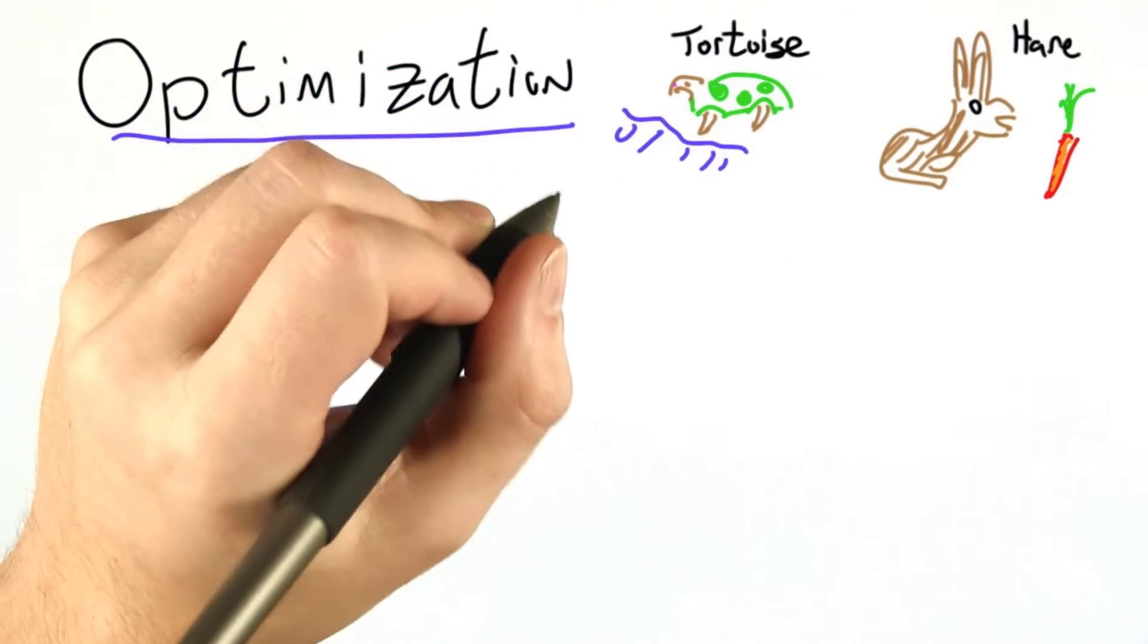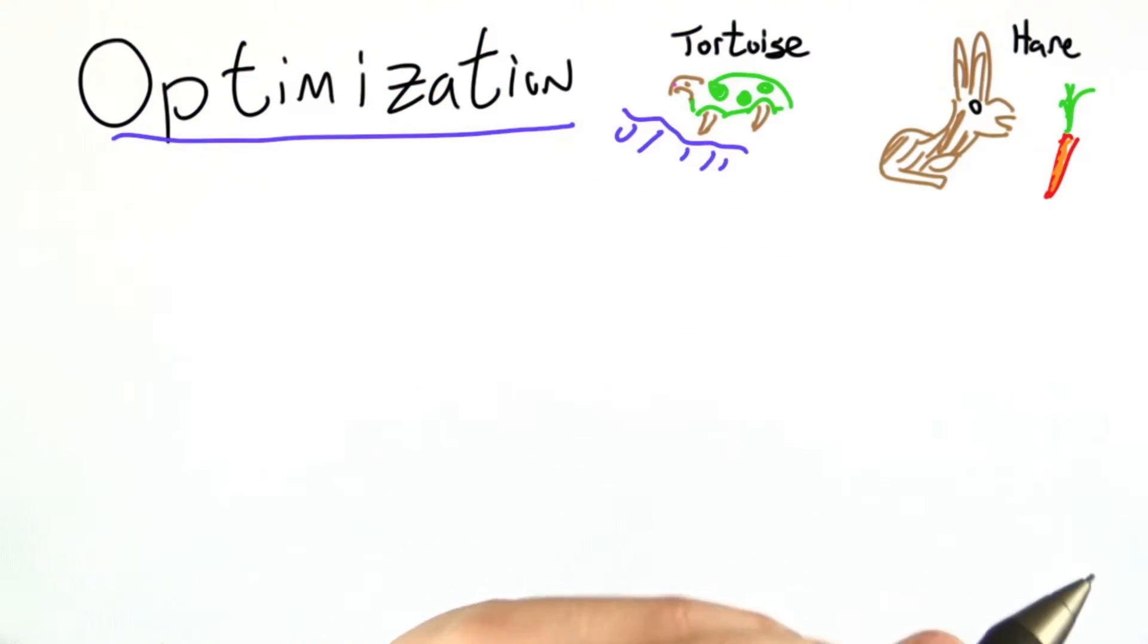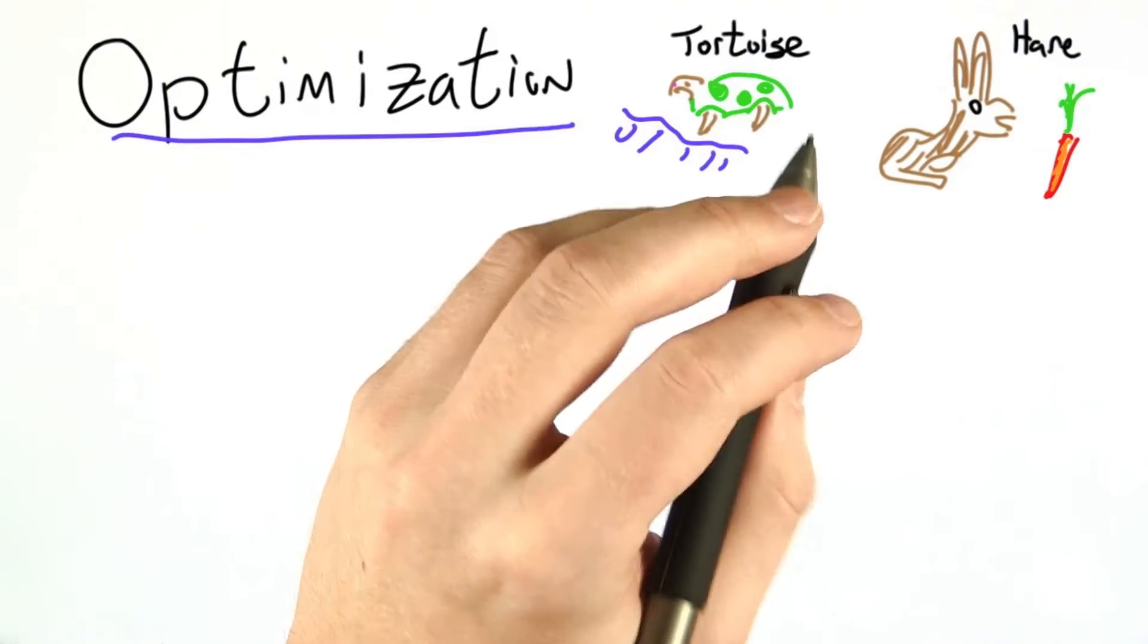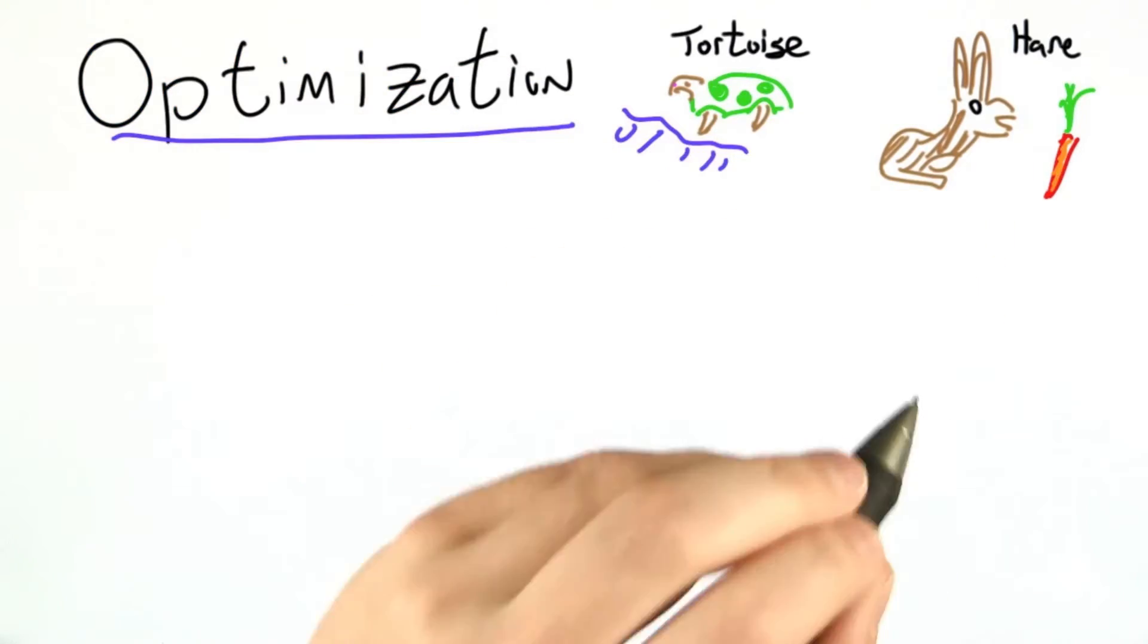Over on the right, I've doodled the tortoise and the hare. You can tell this is a hare and not a, let's say, mutated donkey because of the label. Those labels are always correct.